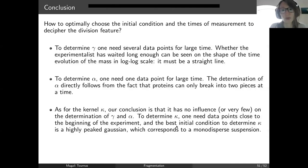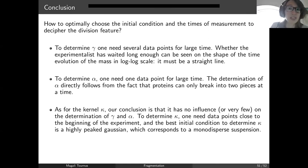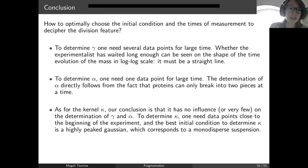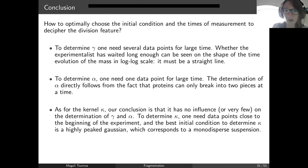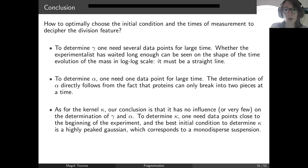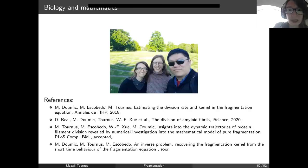In conclusion: to determine gamma, you need several data points at large times to fit the straight line and estimate its slope. To determine alpha, you need at least one data point at large time; the determination relies on the fact that the integral of kappa equals two — particles break into exactly two pieces. For the kernel kappa, you need a different experiment: an initial condition close to a delta function and early-time data points. Thank you for listening.